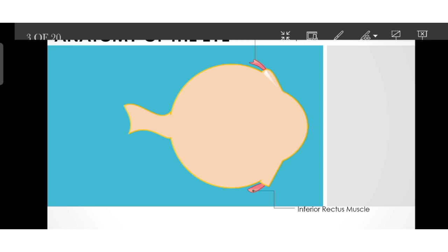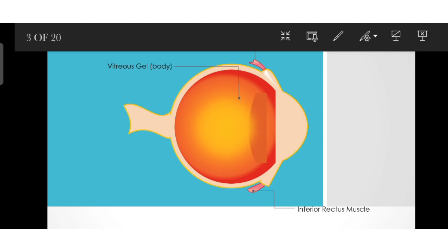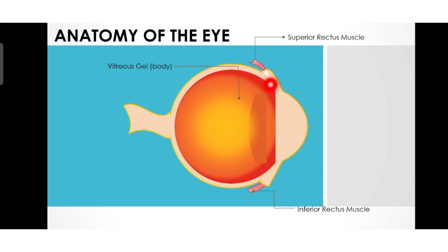Next we have the vitreous gel or the vitreous body. This part is the vitreous gel — it is a quite thick gel-like substance filled inside the eye, and it is the largest chamber of the eye. It helps in maintaining the pressure inside the eye and helps to hold its spherical shape.